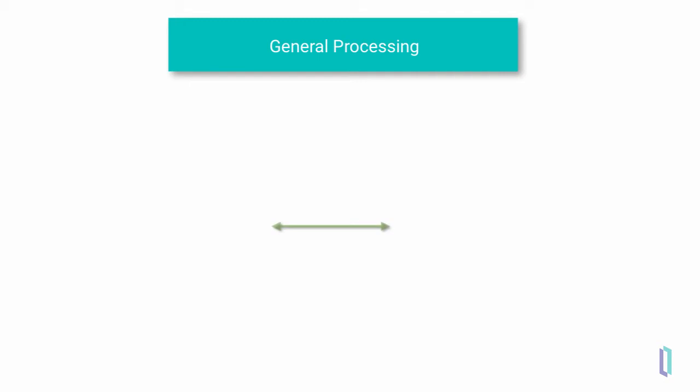Now let's look at an example of a more complicated message flow. This time, we will use a business process to orchestrate the flow of the messages, control the requests to the database, and combine the results to send back. As we go through this example, pay attention to the direction of the arrows representing requests and responses.